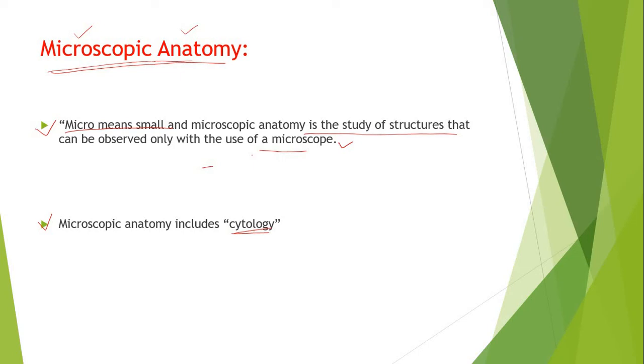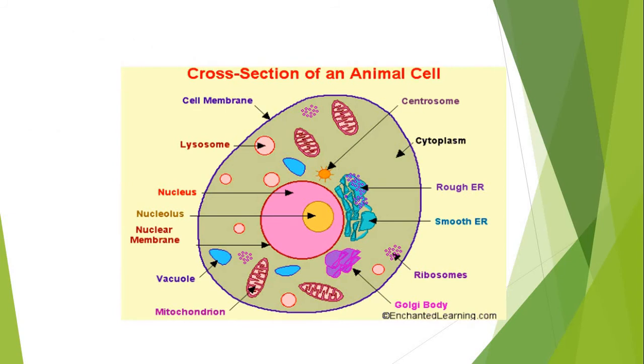Here I have given some cross section of an animal cell. We know that this is microscopic, we cannot see it with our naked eye. So here this outer layer is called as cell membrane.